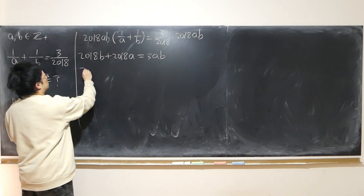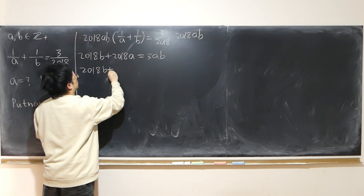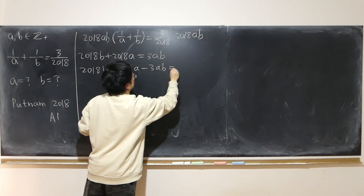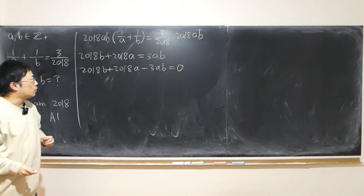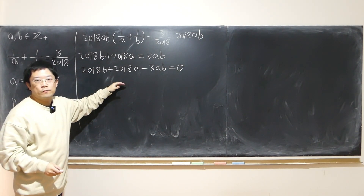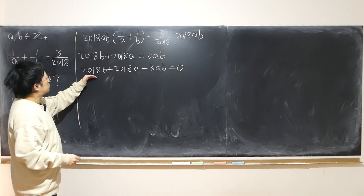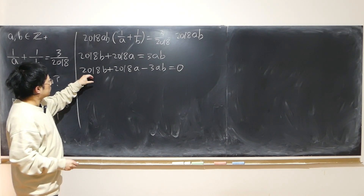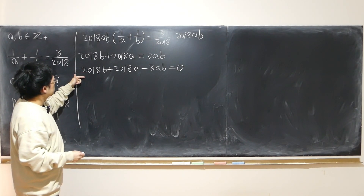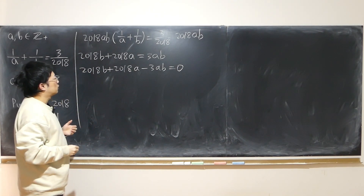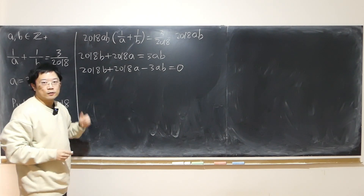Rearranging: 2018B + 2018A − 3AB = 0. Our ultimate goal is to turn this into something factorizable. Right now it's not completely factorizable — if I factor out B from those two terms, I have nothing useful. So how can I make it easily factorizable?